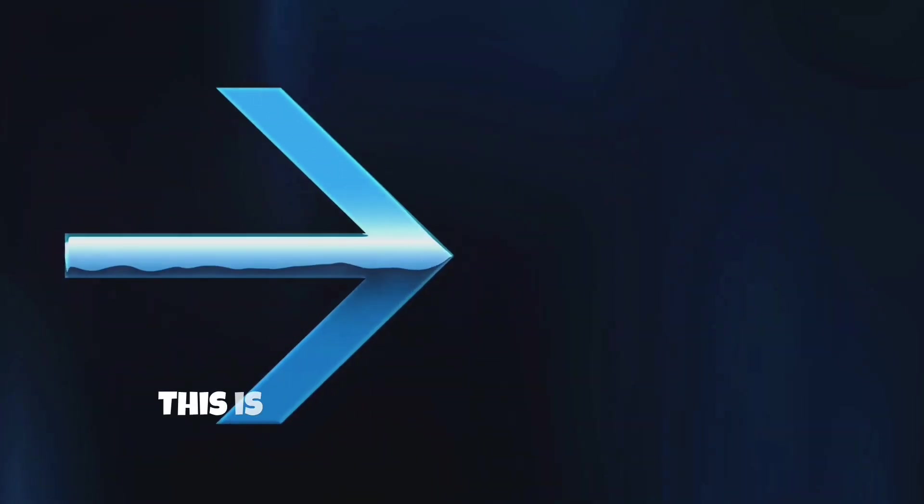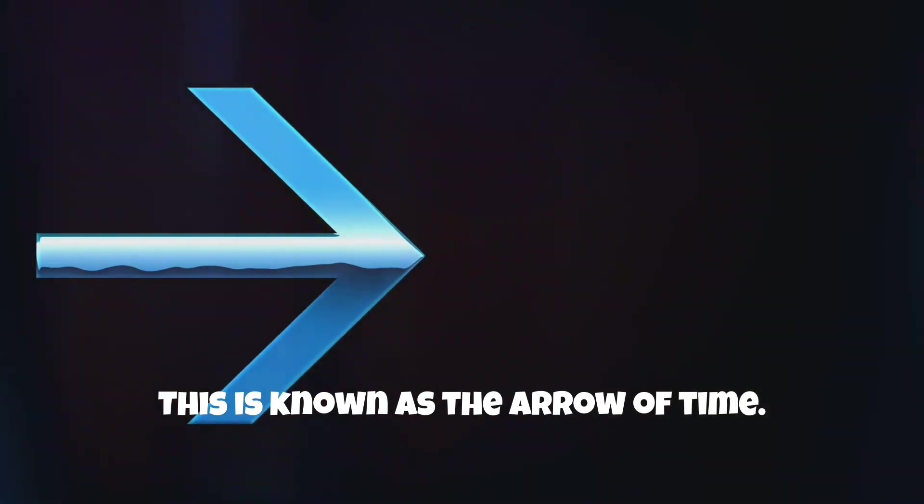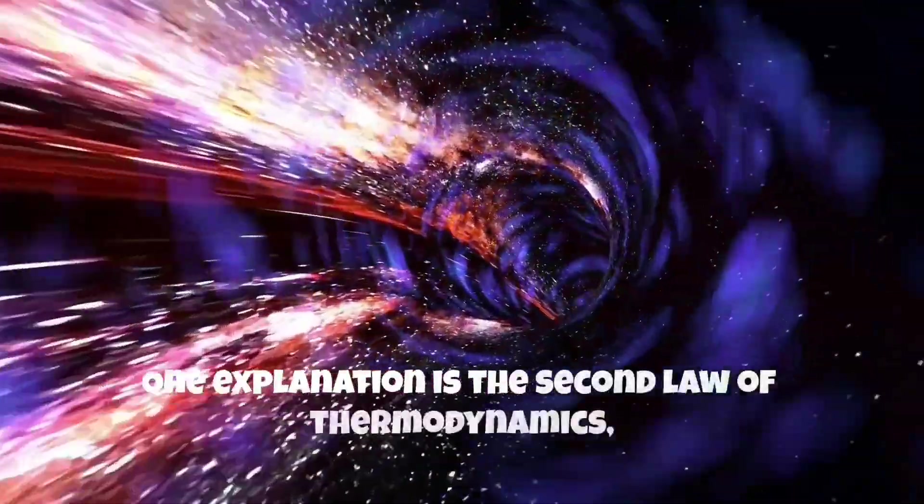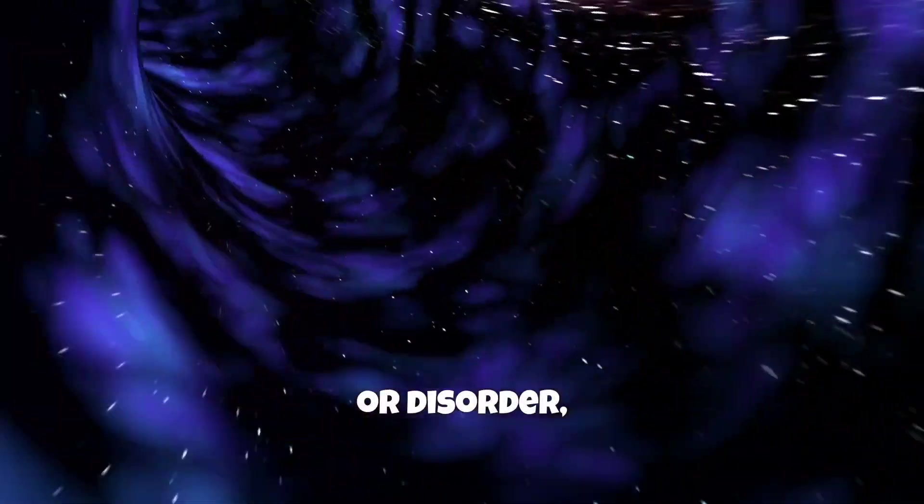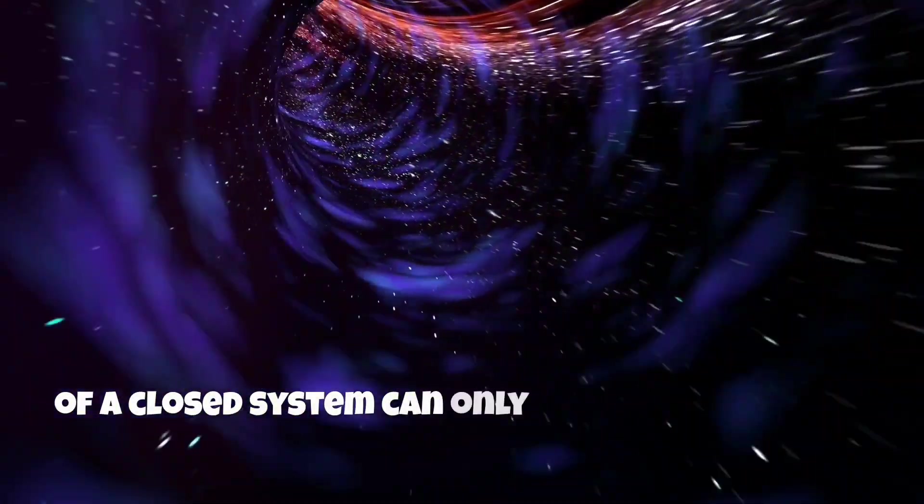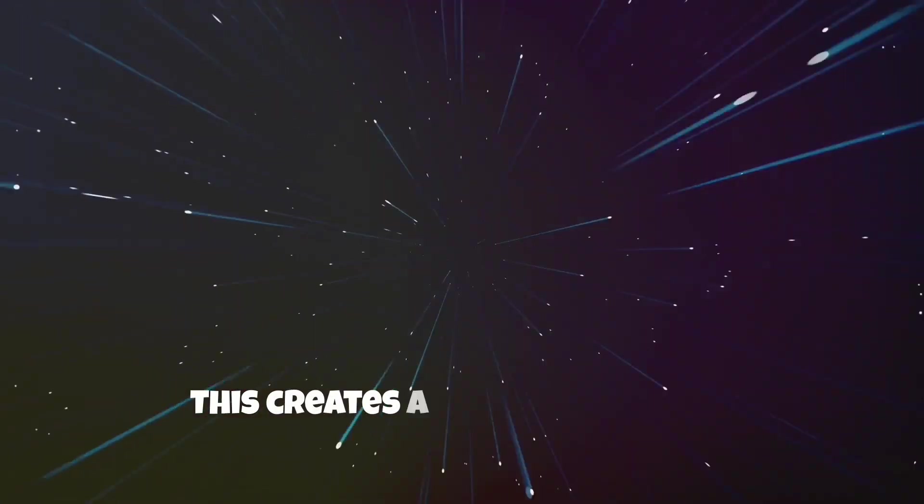But why does time seem to flow in one direction from the past to the future? This is known as the arrow of time. One explanation is the second law of thermodynamics, which states that the total entropy or disorder of a closed system can only increase over time.